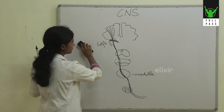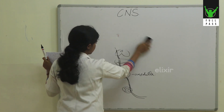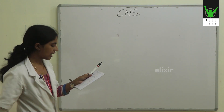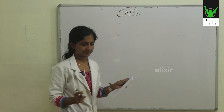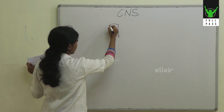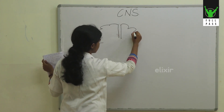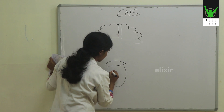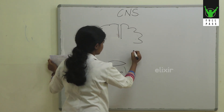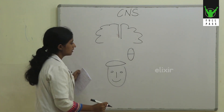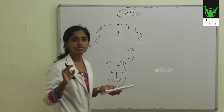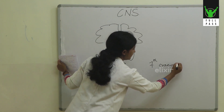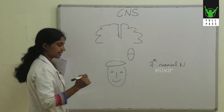Moving on to the next question: the upper part of the face is spared in UMN lesions. This is a very interesting question, and to understand it we should know about the supply of the facial muscles. The muscles of the face are supplied by the facial nerve, which is the 7th cranial nerve. The 7th cranial nerve has its nucleus situated at the level of the pons.